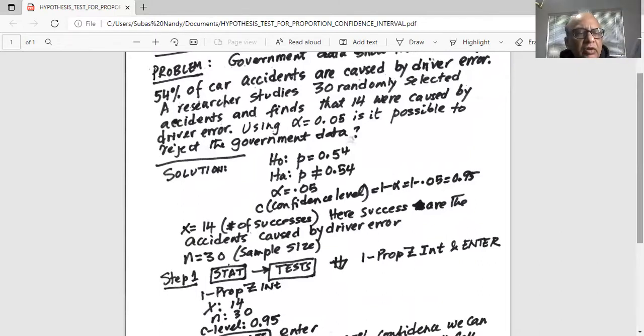then highlight test on the top row. And then you are going to scroll down to one prop z int. You're not going to see it in the first screen. So you have to scroll down with the down arrow key beyond the first screen. And in position a as in apple, you'll see one prop z int. Select that.